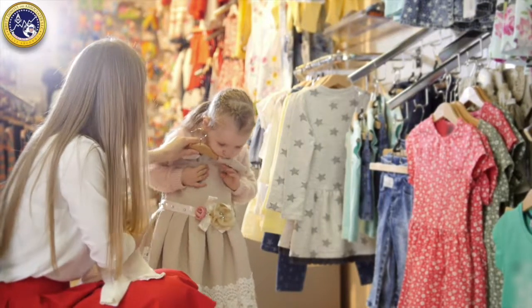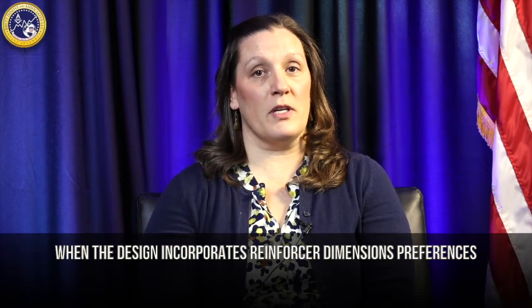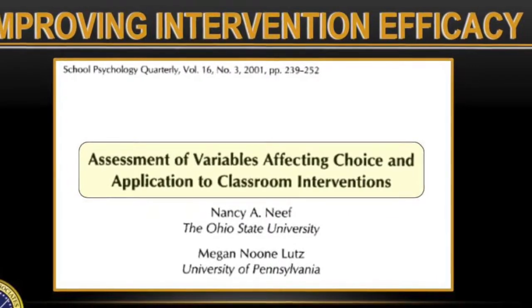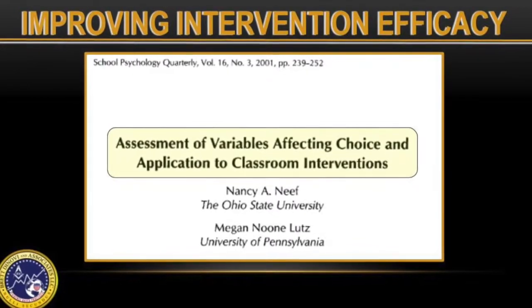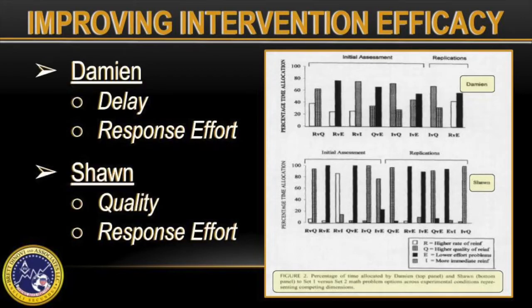Individuals have preferences for dimensions of reinforcement, and these preferences influence choice, which suggests that behavioral interventions can be improved when the design incorporates reinforcer dimension preferences. Nancy Neif and Megan Noon-Luntz used the brief assessment described earlier to inform behavior interventions for two children diagnosed with ADHD. Results indicated that for one participant, reinforcer delay was most influential, followed by reinforcer effort, whereas for the second participant, reinforcer quality was most influential, followed by reinforcer effort.